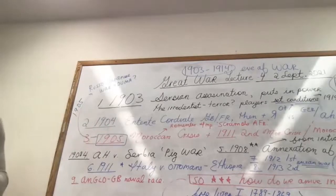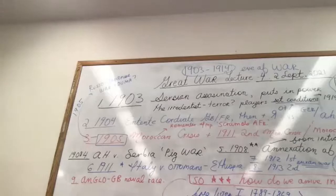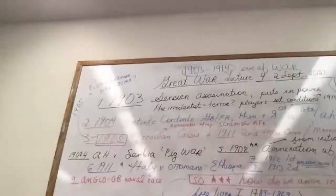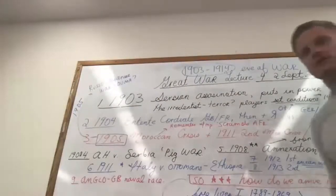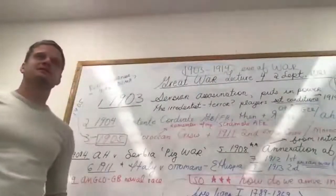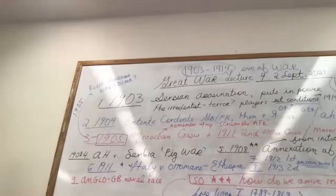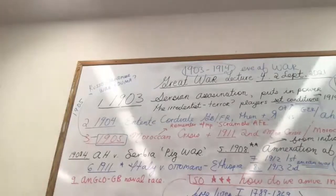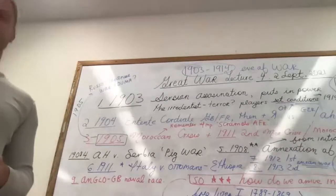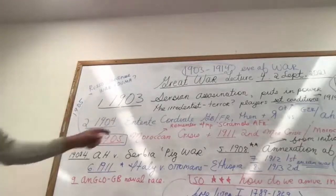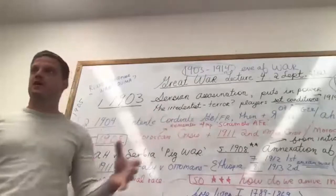Point number two: the Entente Cordiale — the friendly agreement between Great Britain and France in 1904. This is incredibly important. We children of the 20th century assume Great Britain and France are allies — they fought World War One and World War Two together — but we forget how much the British and French historically hate each other.